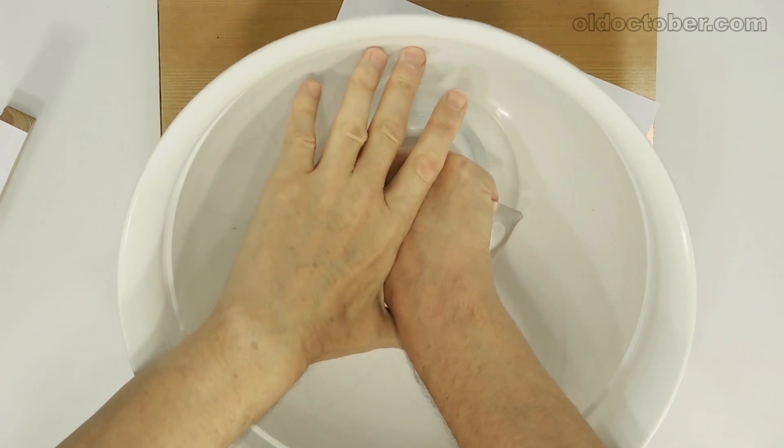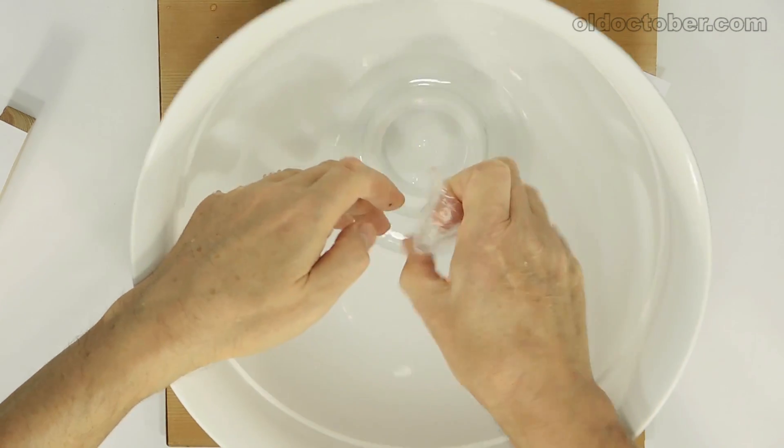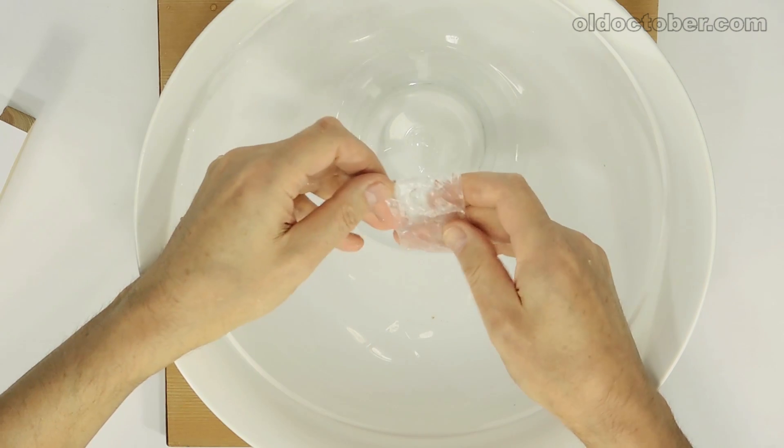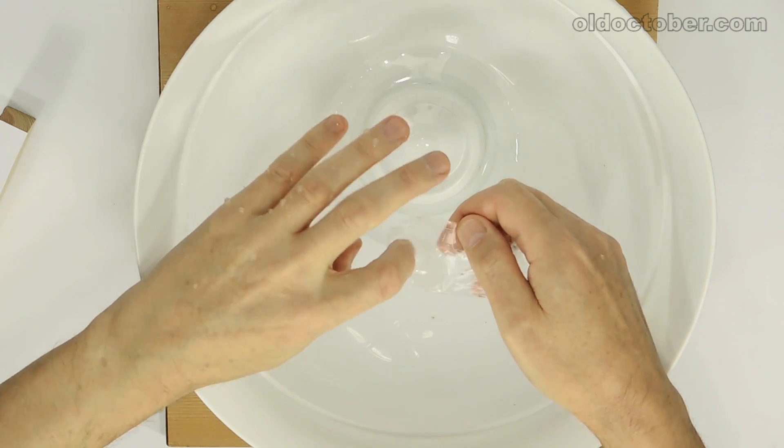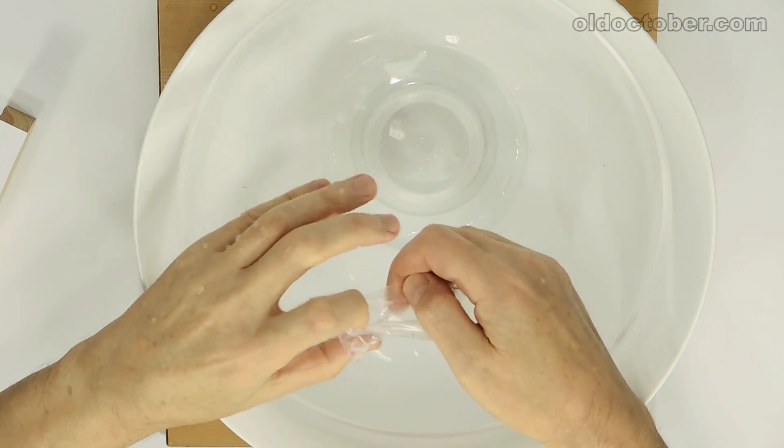To check the quality of the weld, you can squeeze the packaging and bring it to destruction. If the gap of the compartment occurred in the plane of the film and not along the seam, then the quality of the seams can be considered good.